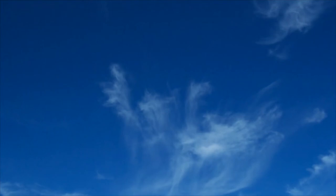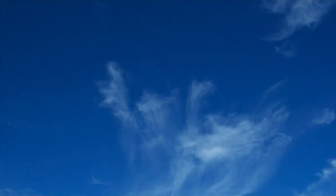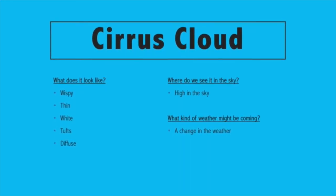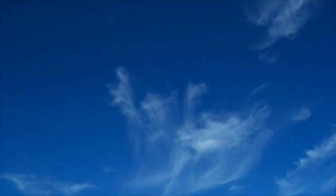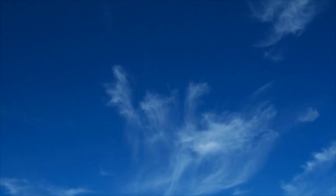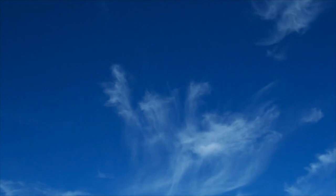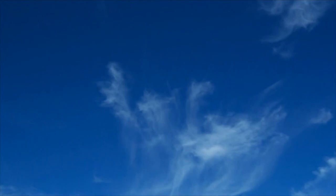Now let's think about what kind of weather this cloud might be predicting. A cirrus cloud, found high up in the sky, will usually tell us that there's going to be a change in the weather. So if it's really nice and sunny out when you see this cloud, it might be changing soon. If you saw a cirrus cloud while out hiking, it might be important to remember to bring your rain jacket or some extra layers because the weather might be changing sometime soon. Write down the weather prediction in the appropriate section of your cloud journal.